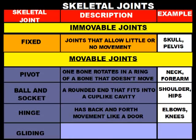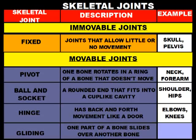Our last joint is called the gliding joint. A gliding joint occurs when one part of a bone slides over another part of the bone. You can find gliding joints in your spine, your ankles, and your wrist.